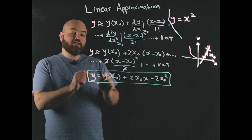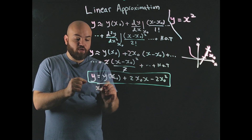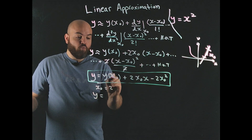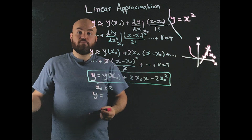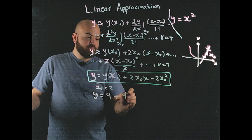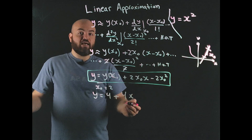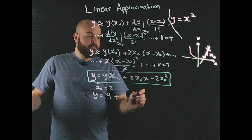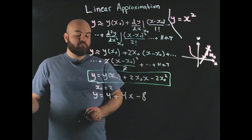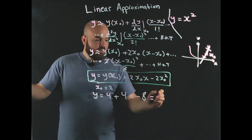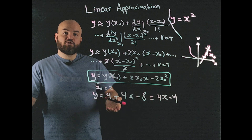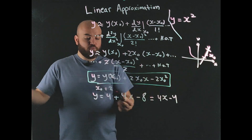Let's put in some numbers. Say we approximate at x0 = 2. Then y(x0) = 4, and 2*x0 = 4, so y ≈ 4 + 4*(x − 2) = 4x − 4. So the equation for the linearized system about the point x0 = 2 is y = 4x − 4.